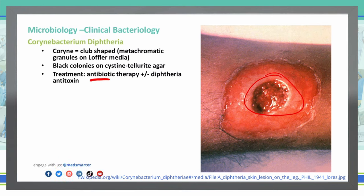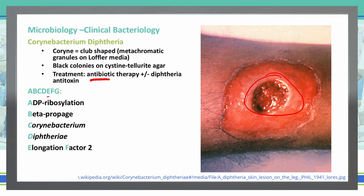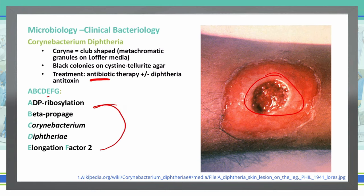A good way to remember Corynebacterium diphtheriae is using the mnemonic ABCDEFG. A is ADP ribosylation — how the exotoxin inhibits protein synthesis. B is beta-prophage, which encodes the exotoxin. C and D are Corynebacterium diphtheriae. E is elongation factor 2, which is inhibited via ADP ribosylation, inhibiting protein synthesis. And G is granules — our metachromatic granules.